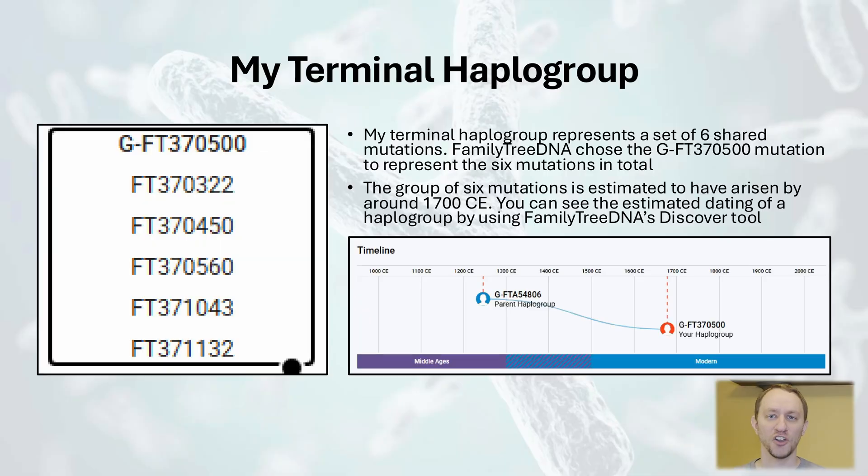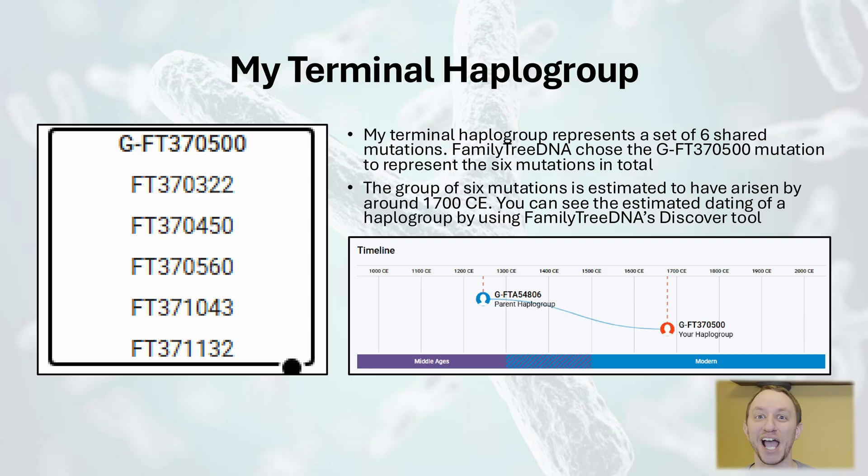I always recommend starting with your own branch. Remember that your terminal haplogroup is the most recent mutation or group of mutations that you share with other testers, and it represents your closest connection with other Big Y testers. On the Big Y Block Tree, your own terminal haplogroup will be highlighted in a black box to help distinguish it from other branches.